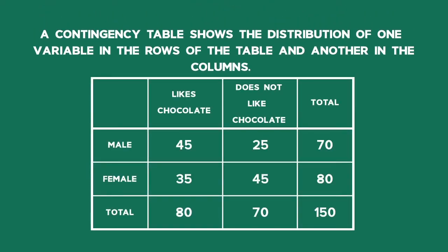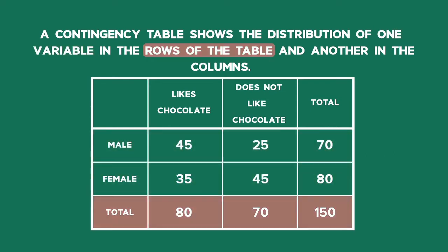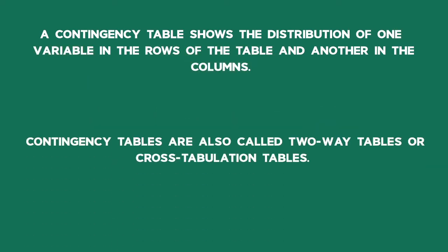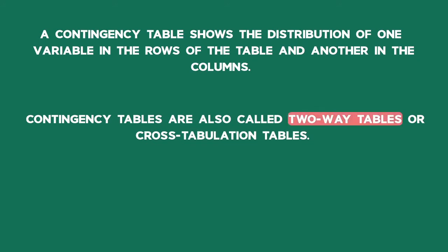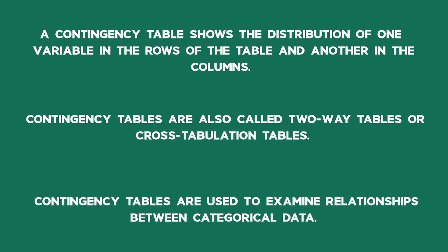A contingency table shows the distribution of one variable in the rows of the table and another in the columns. Contingency tables are also called two-way tables or cross-tabulation tables. Contingency tables are used to examine relationships between categorical data.